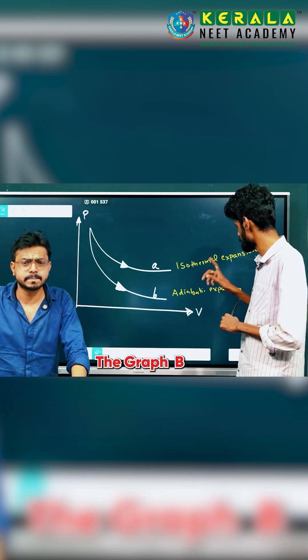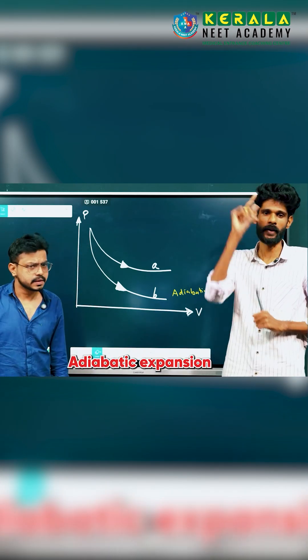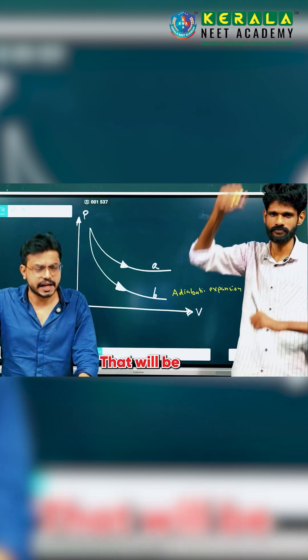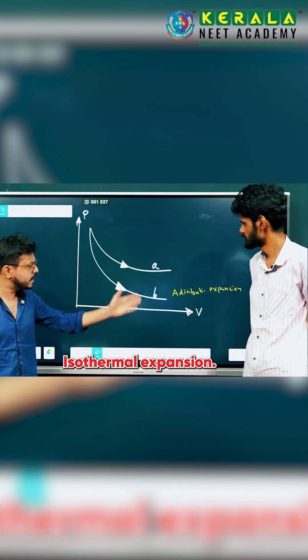Graph B is adiabatic expansion. What about graph A? That will be isothermal expansion.